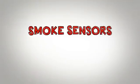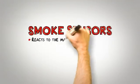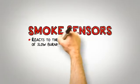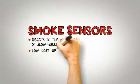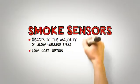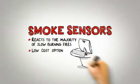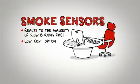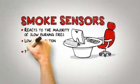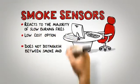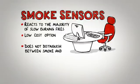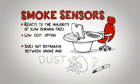Smoke sensors. For many buildings, the optical smoke sensor is the preferred choice. This device reacts to the majority of slow burning fires and is a low cost option. The detector is suitable for clean environments such as an office area. However, it does not distinguish between smoke and many of the common causes of false alarms such as dust, steam, cigarette smoke and cooking fumes.